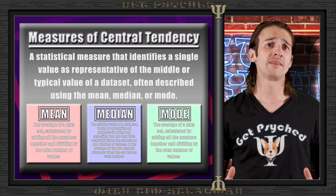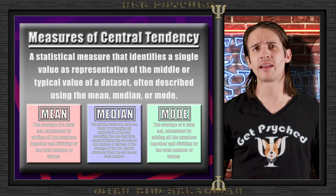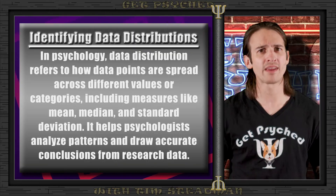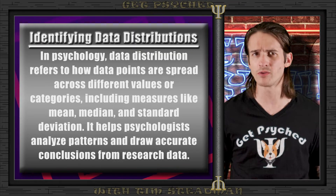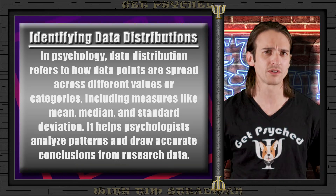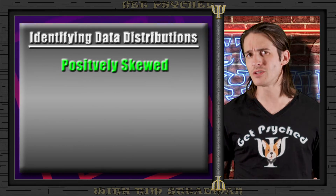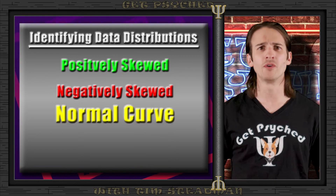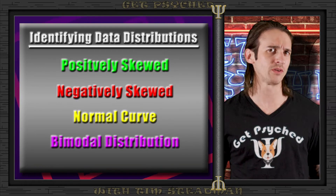Things that you learned in fifth grade math. Identifying the mean, median, and mode will help us understand how data is distributed. Data distributions tell us how data points spread out or cluster around central values, revealing deeper insights into psychological research. When it comes to data distribution, it can be positively skewed, negatively skewed, a normal curve, or something known as bimodal distribution — and we're going to be talking about all of them.